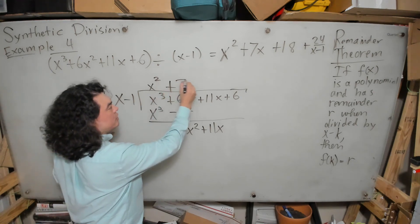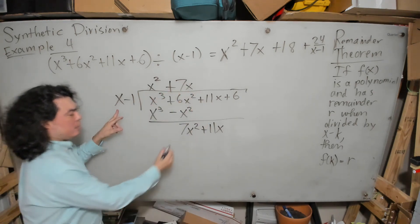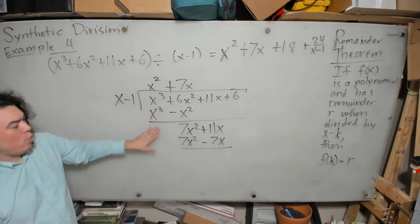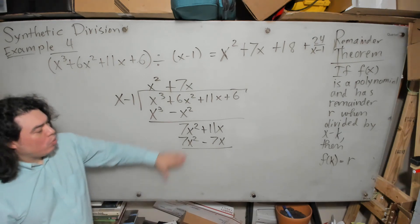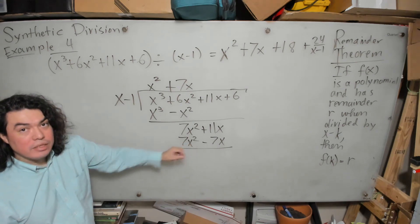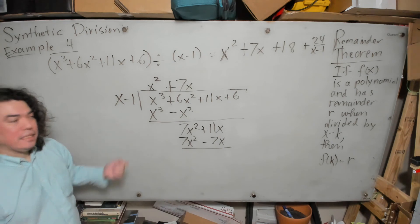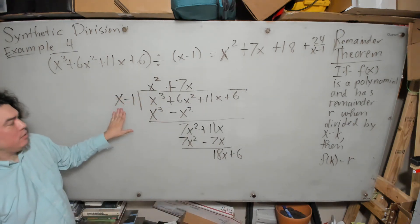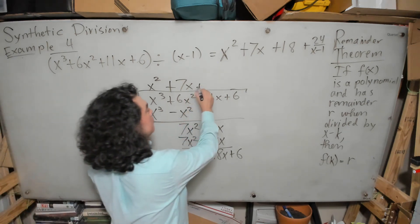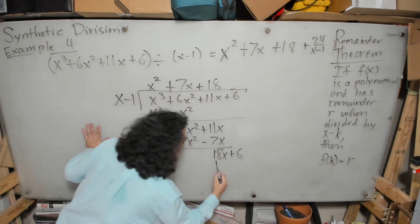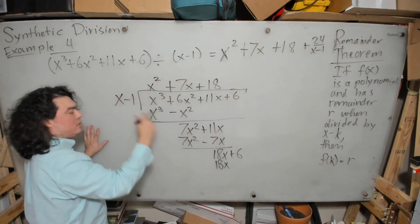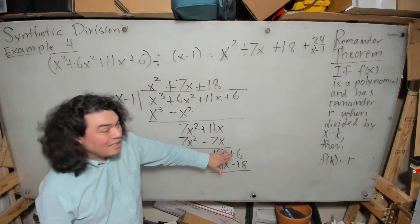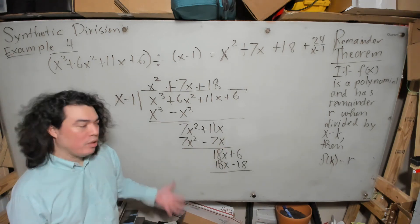How many times does x go into 7x squared? 7x times, because 7x times x gives 7x squared. So we write plus 7x. Then 7x times negative 1 is negative 7x. Now 7x squared minus 7x squared is gone; 11x minus negative 7x is 11x plus 7x, which is 18x. Bring down the plus 6. What times x gives 18x? That's 18. Then 18 times negative 1 is negative 18. So 18x minus 18x is zero, and 6 minus negative 18 is 6 plus 18, which is 24.